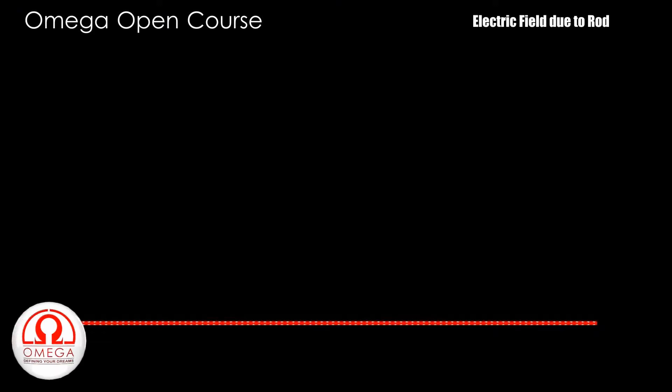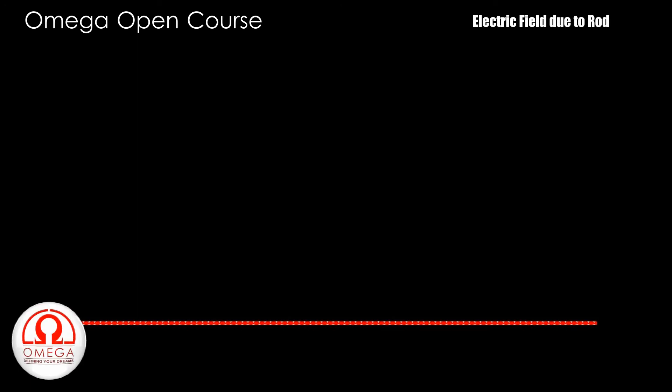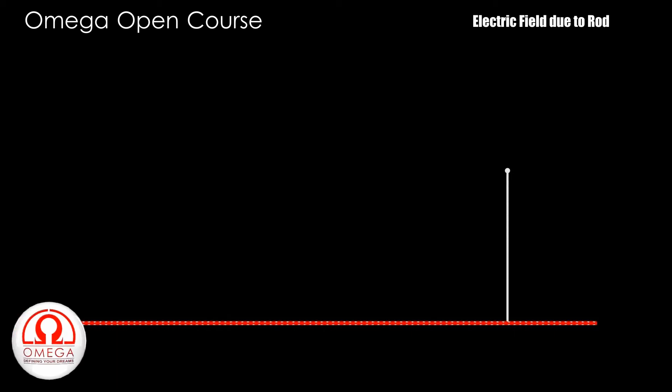Let there be a uniformly charged rod of length L and linear charge density lambda. Suppose we have to find the electric field due to this rod at a point which is at a perpendicular distance R from the rod.